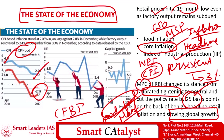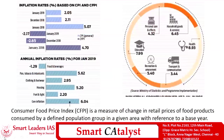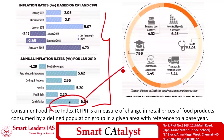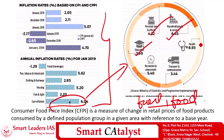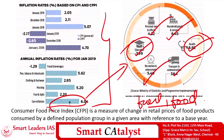Another key index is the Index of Industrial Production (IIP), also released by CSO. This is a short-term composite index that tracks changes in the volume of production of a basket of industrial products within a given period. It includes three main sectors: mining, manufacturing, and electricity. The IIP growth has reduced from 4.5% in April 2018 to 2.4% currently. Core inflation excludes volatile food and fuel prices and includes components like education, personal care, household services, health, transport, and communication — of which health and education constitute the major share.